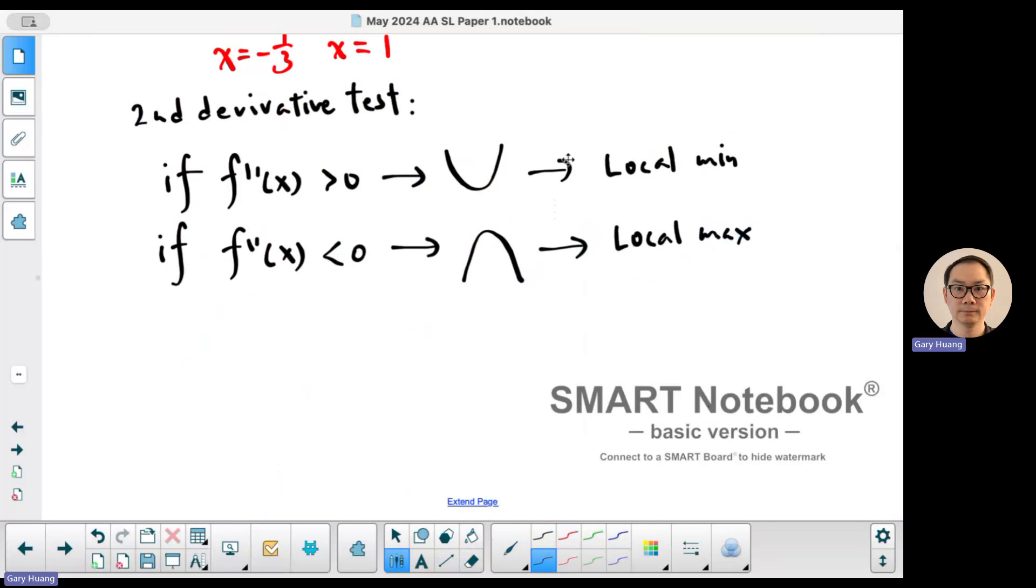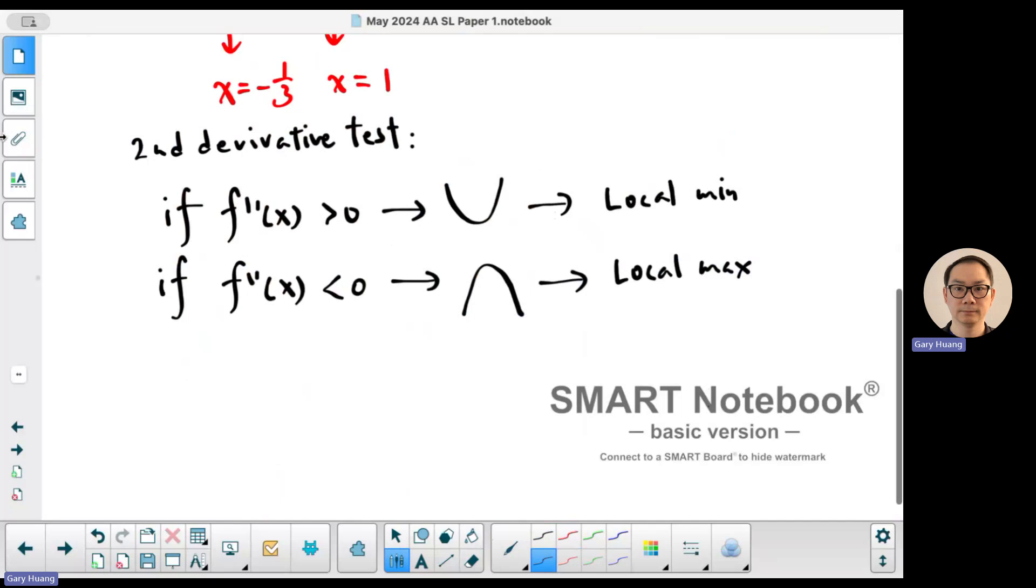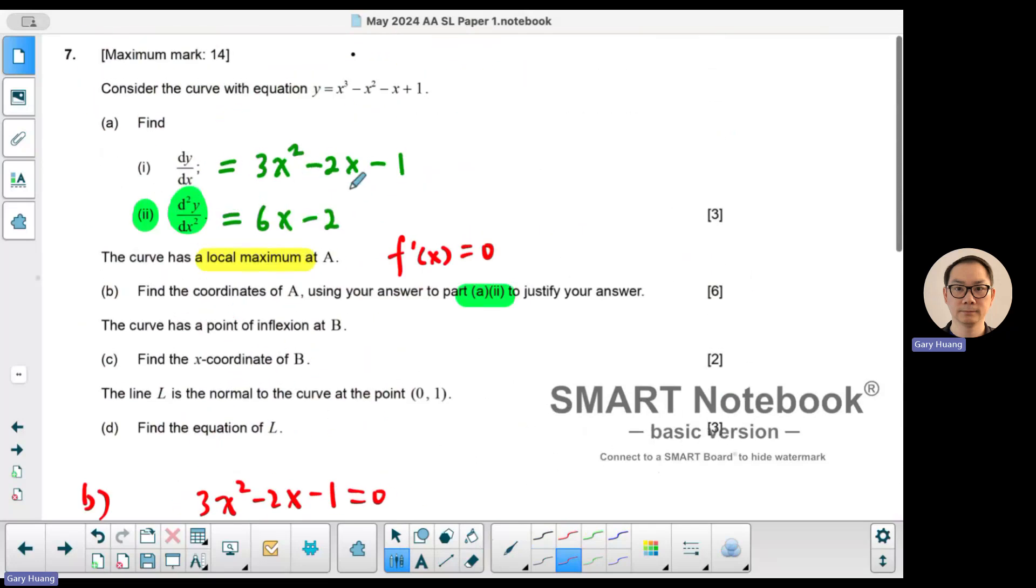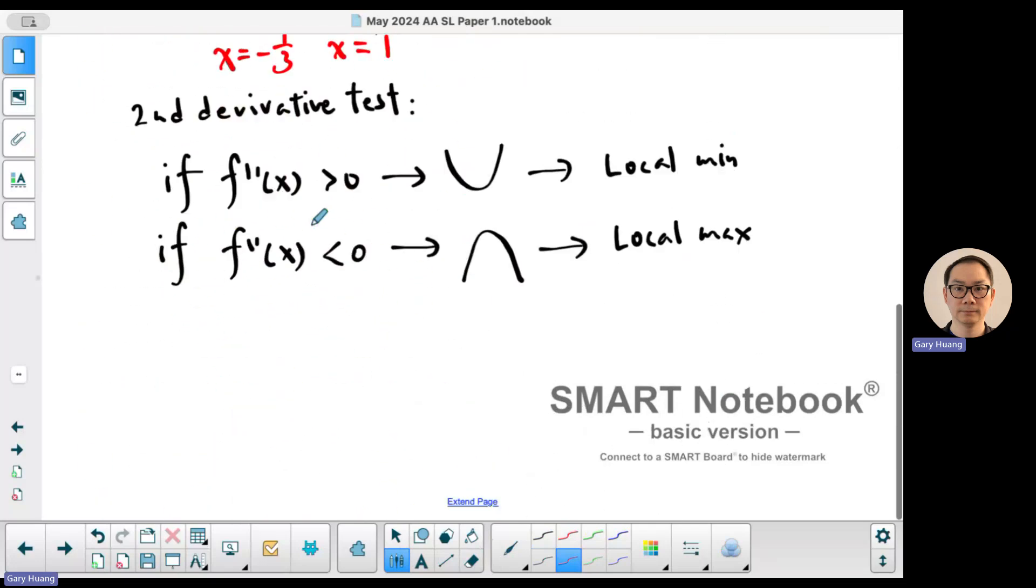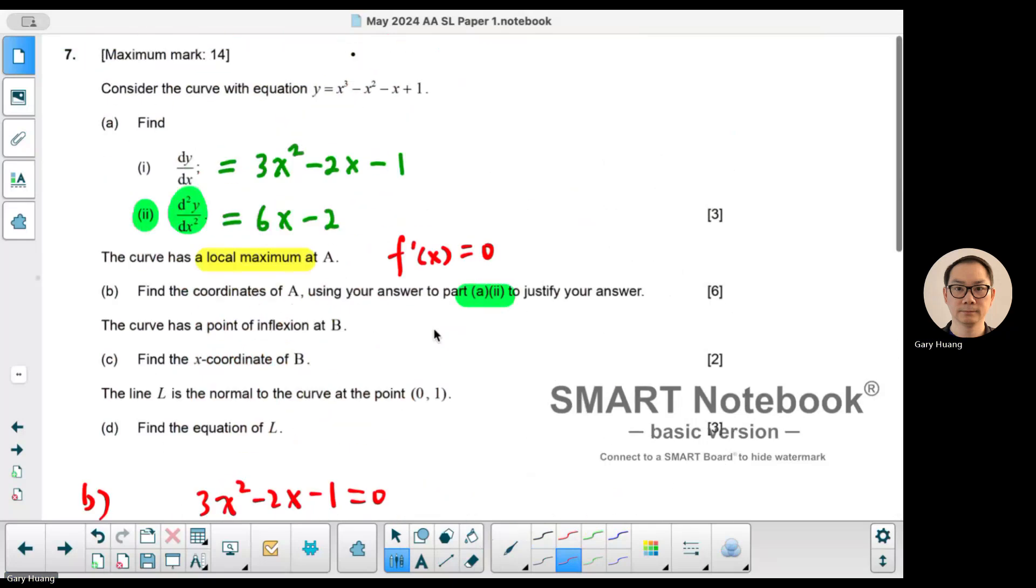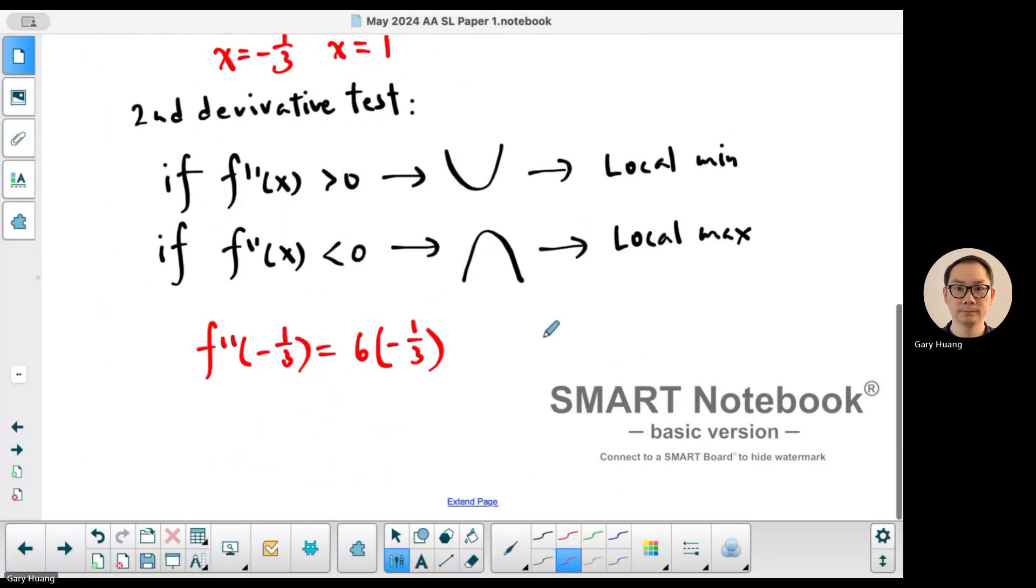So what we do then is we're going to substitute those two points into the second derivative to see whether it's a positive number or a negative number. Now what is the second derivative? It was 6x - 2. So the second derivative of -1/3 is going to be 6 multiplied by x minus 2.